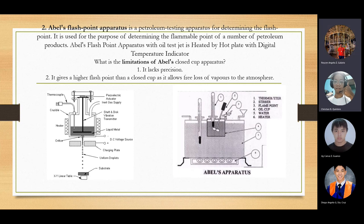This is the example we showed earlier. Abel flashpoint is a petroleum testing apparatus for determining flashpoint. It is used for determining the flammable point of a number of petroleum products. Abel flashpoint apparatus with oil test jet is heated by hot plate with digital temperature indicator. There's a small slider with an opening that can be opened and closed. Light the matchstick and bring it close. Then we can see if there's flashpoint or firepoint.